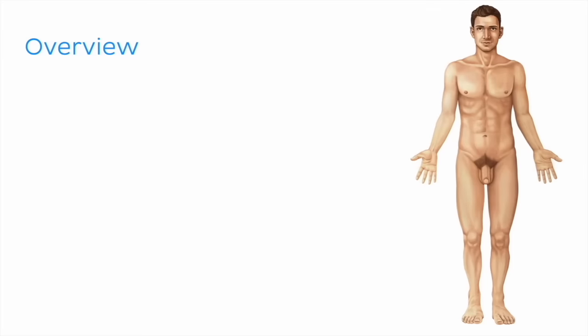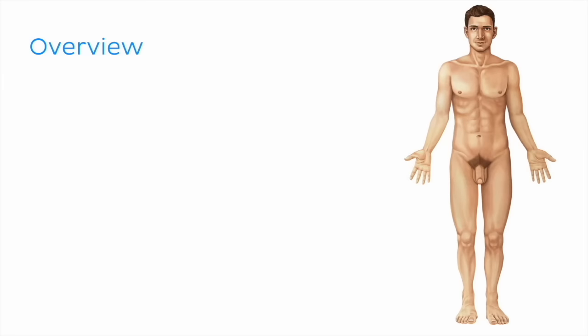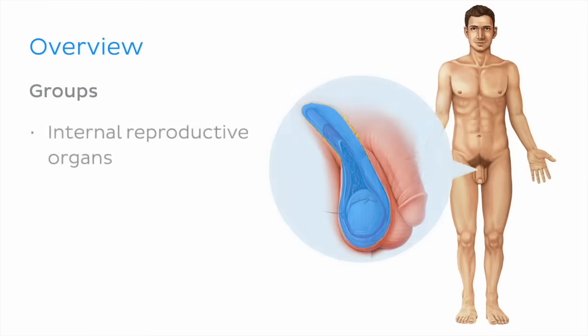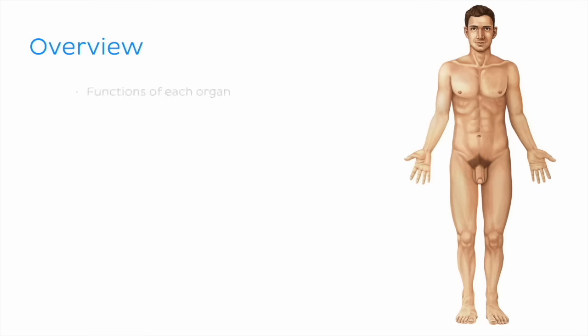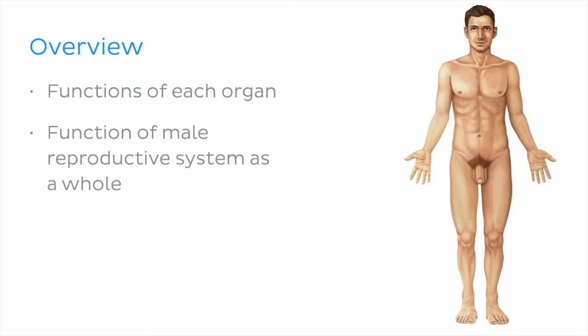In today's tutorial, we are going to learn all about the male reproductive organs, which are divided into two groups, the internal and the external reproductive organs. Along the way, we will discover the functions of each organ and the functions of the male reproductive system as a whole.